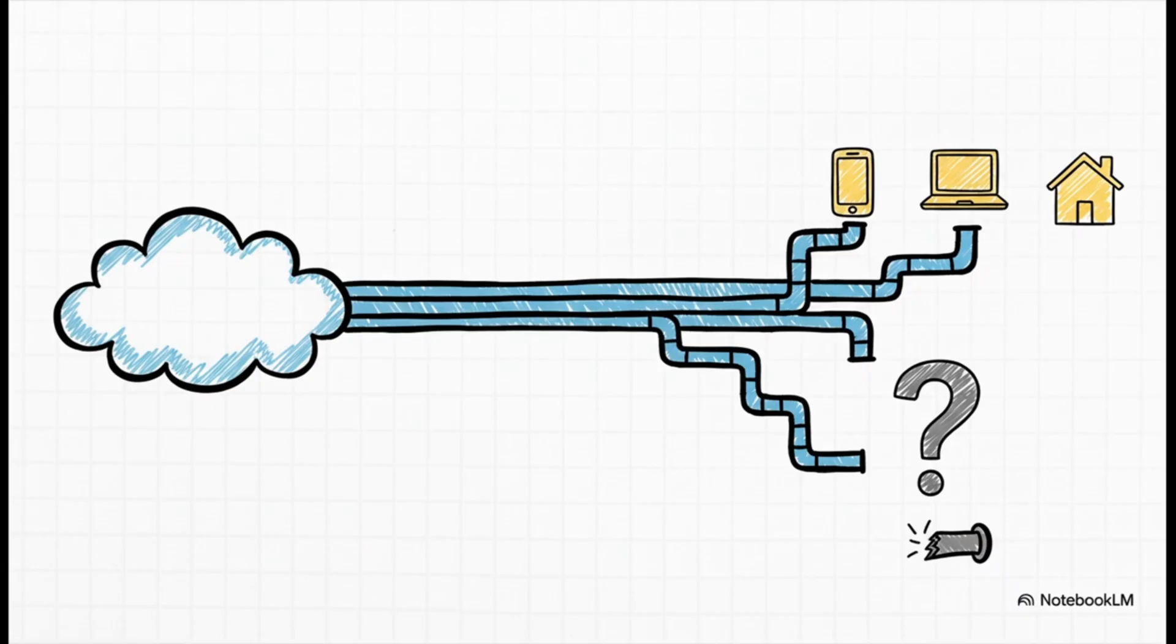Let's just zero in on that third layer for a second, distribution. The source of this analysis claims this is Alphabet's ace in the hole. It's their unbeatable advantage. Why? Because they don't need to go out and fight for users. They already own all the roads that lead right to them.